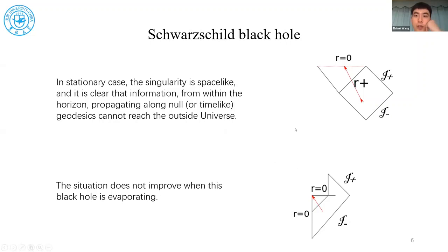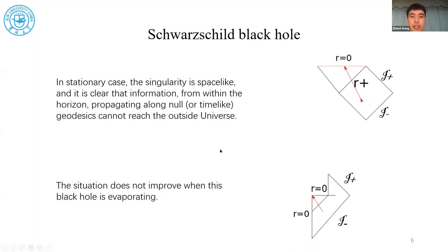Before introducing our approach, I will introduce the Penrose diagram for the Schwarzschild black hole. In the stationary case, for the Schwarzschild black hole, the singularity is spacelike and the horizon is null. So nothing inside the black hole can escape to the outside universe. When you consider the black hole evaporating away by Hawking radiation, this situation will not change — information can still not escape from the horizon.